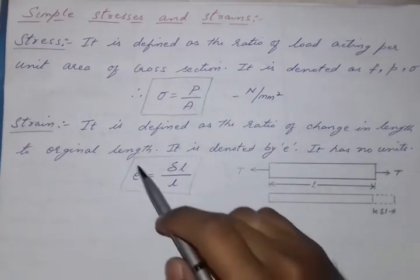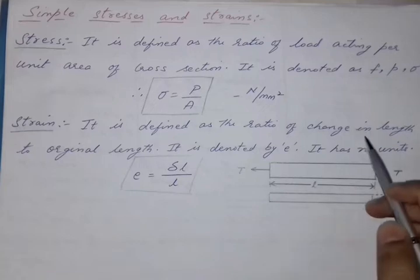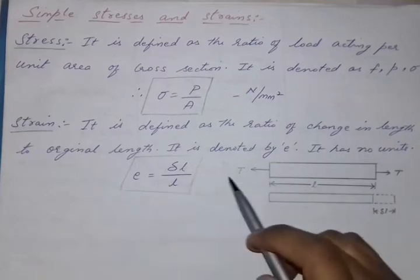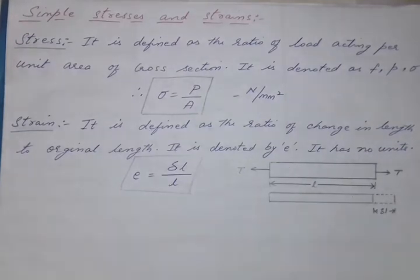Next, strain. Strain is defined as the ratio of change in length to original length. It is denoted by small e and it has no units.